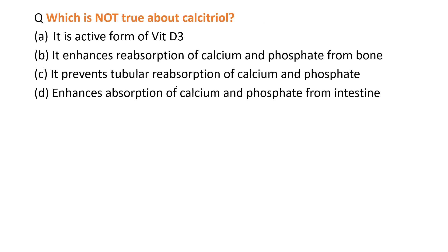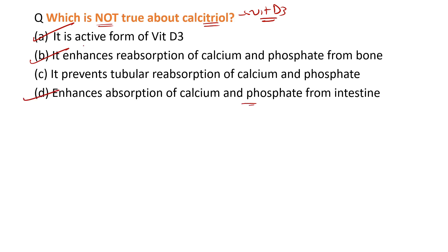The next MCQ: which is not true about calcitriol? Calcitriol is the active form of vitamin D3. The correct statements are: it is the active form of vitamin D — correct; it enhances reabsorption of calcium and phosphate from bone — correct; it enhances absorption of calcium and phosphate from the intestine — correct. The wrong statement is that it prevents tubular reabsorption of calcium and phosphate. So that is the false statement.